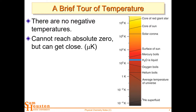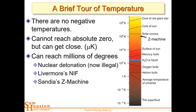We can get close, and we'll show some ways of getting close today. We can also reach millions of degrees — nuclear detonation, which is now illegal. Livermore's National Ignition Facility uses laser fusion. The Sandia Z machine — Z is named after the coordinate for the magnetic field, so they call it Z-pinch or magnetic pinch. The Z machine is getting pretty close to solar corona temperatures — 1.6 million degrees and rising.